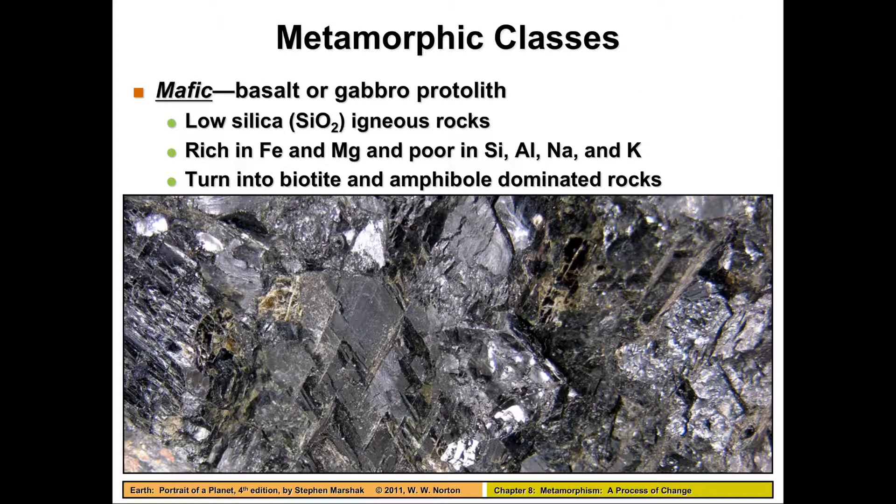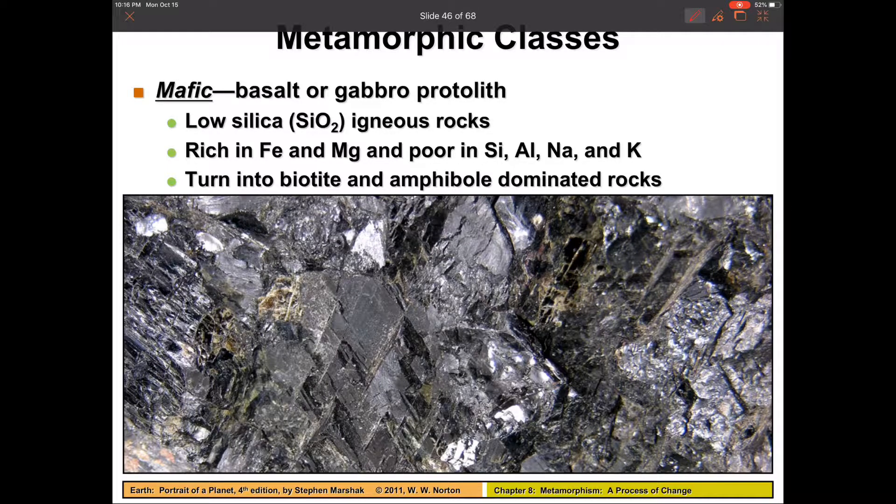We can also start out with a mafic metamorphic class, which this one should be obvious to you at this point. You've heard this word a lot through the course of the semester. That's going to be basalt or gabbro. So it's going to start out as our low silica igneous rock. And as we mentioned, that's going to turn into our amphiboles, our amphibolites, and we can also see biotites in there, which, remember, are the mafic varieties of our micas.